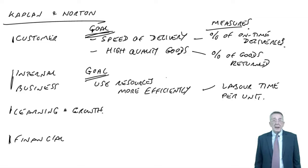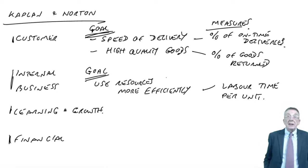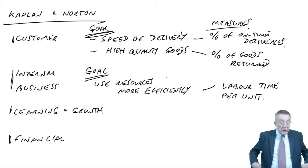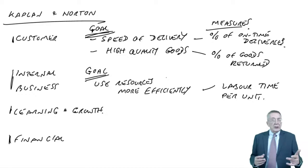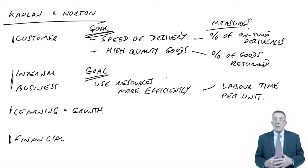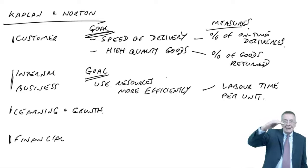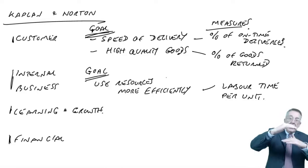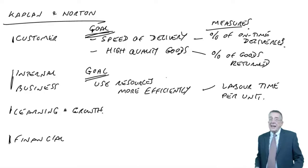Finally, the financial perspective — that really was covered in the financial performance lecture. We need to look at financial measures: how do we create value for our shareholders? Look at profitability and growth. Sales growth is desperately important. One way of increasing profitability is by cutting costs, but you can't keep cutting costs forever — there is a limit. If sales are falling, there comes a time you can't cut any more and profits fall. So we need to always check our sales are growing.